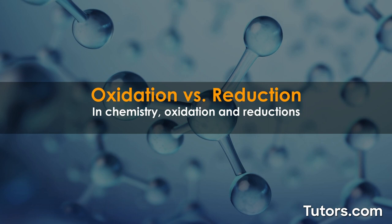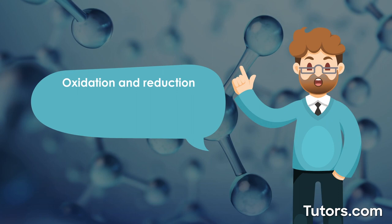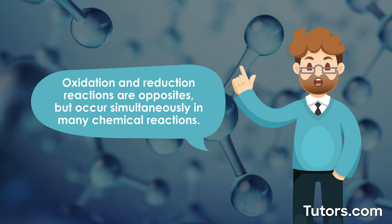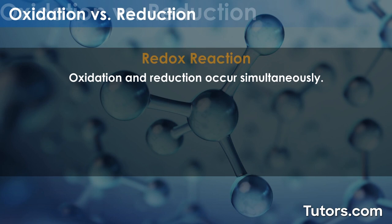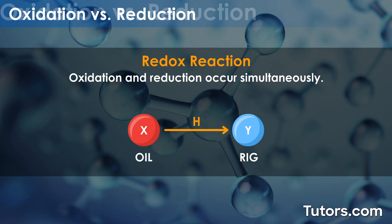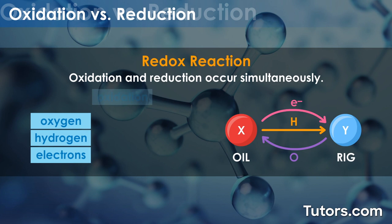Oxidation vs. Reduction. In chemistry, oxidation and reduction are nearly always linked. They are opposites but occur simultaneously in many chemical reactions. When oxidation and reduction occur simultaneously, it is called a redox reaction. During an oxidation-reduction reaction, the oxidation number of atoms changes and there is a transfer of electrons between two substances.